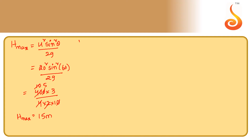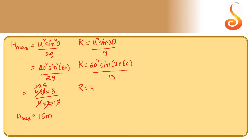We also need to calculate the range. Range = u²sin2θ / g. Therefore, Range = 20² × sin(120°) / 10 = 400 × (√3/2) / 10 = 20√3, which equals 34.64 meters. So the range is 34.64 meters.